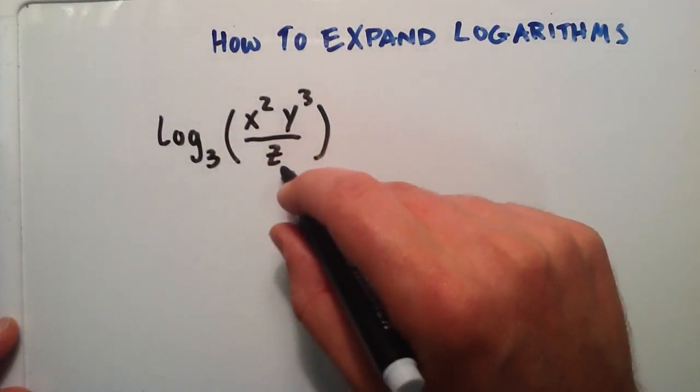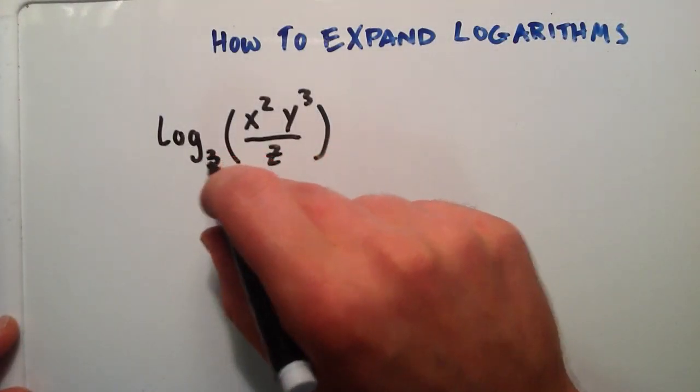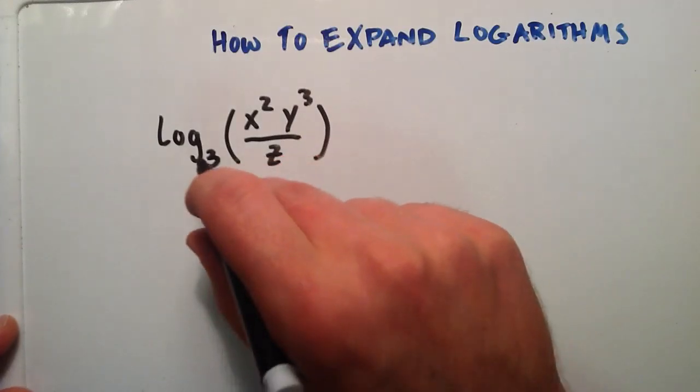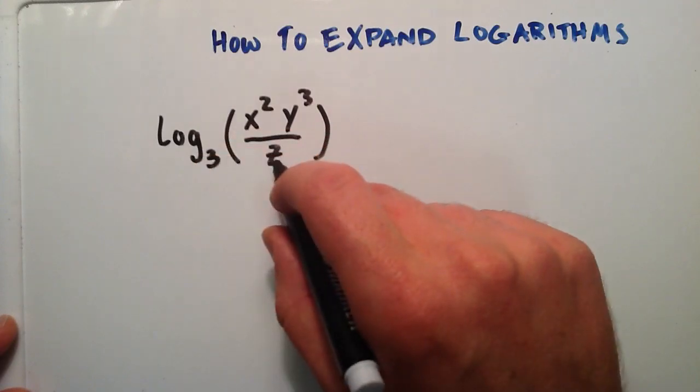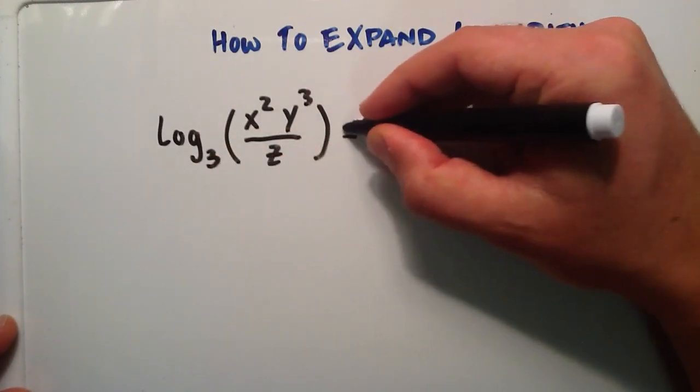So one of the properties I explained to you is that when we have a logarithm of a fraction, then that's equal to the logarithm of the numerator minus the logarithm of the denominator. So let's go ahead and write that out here.